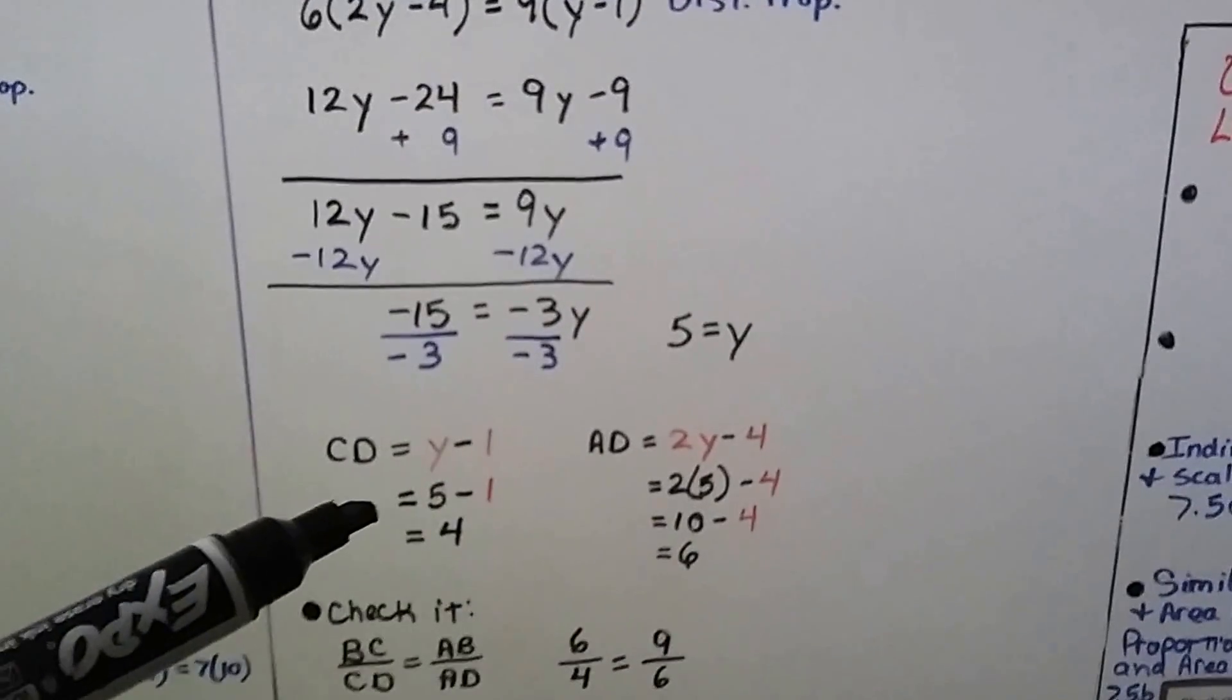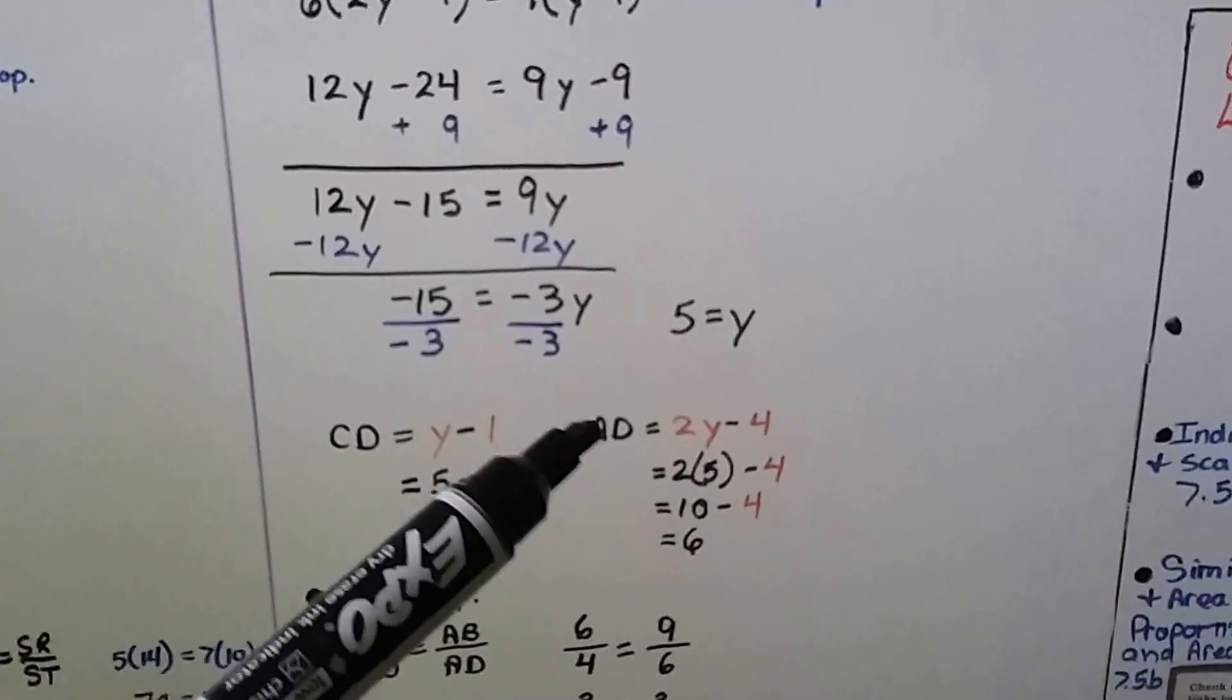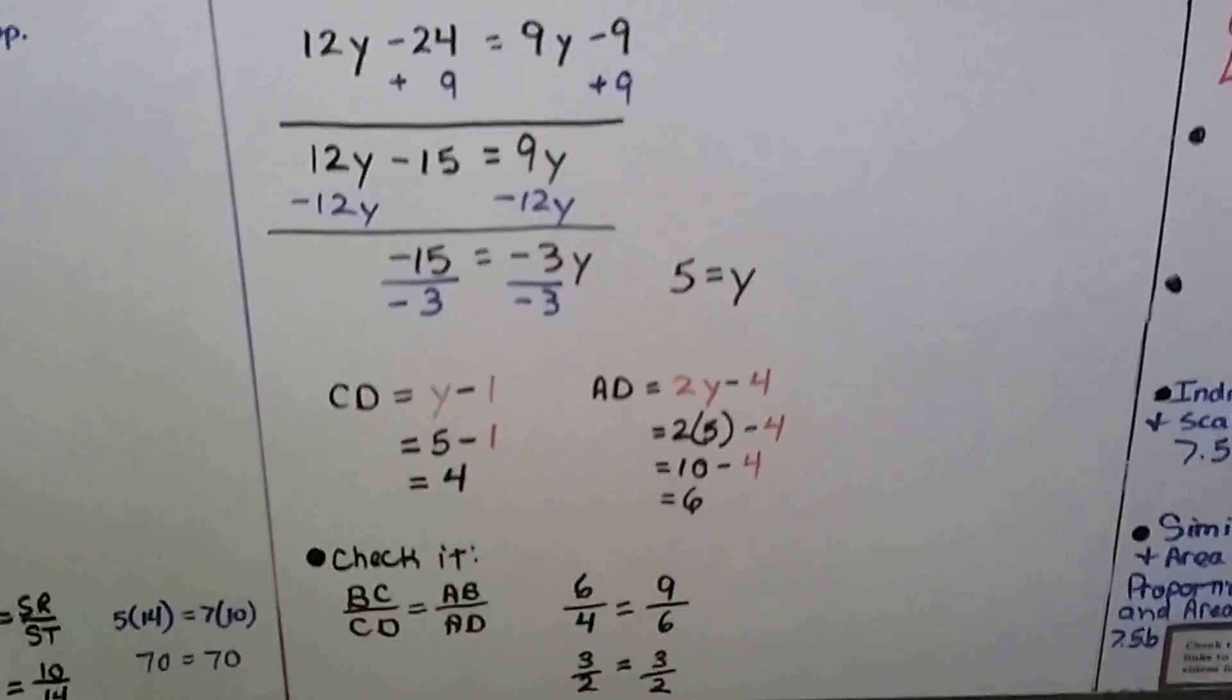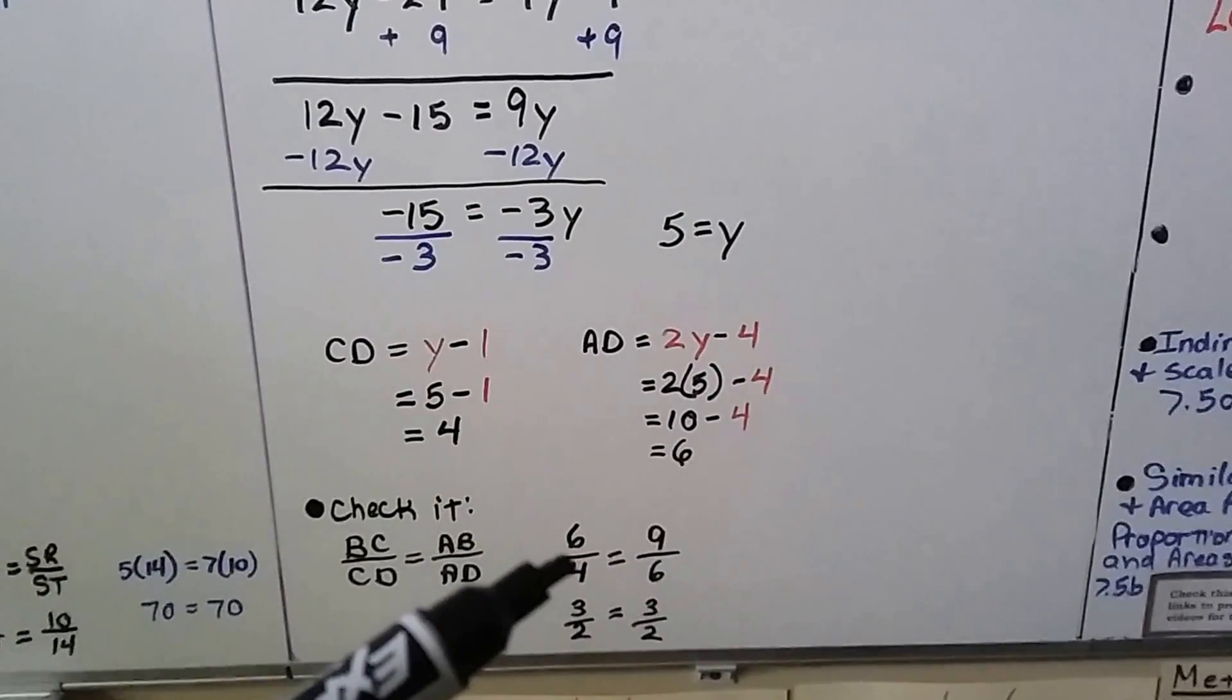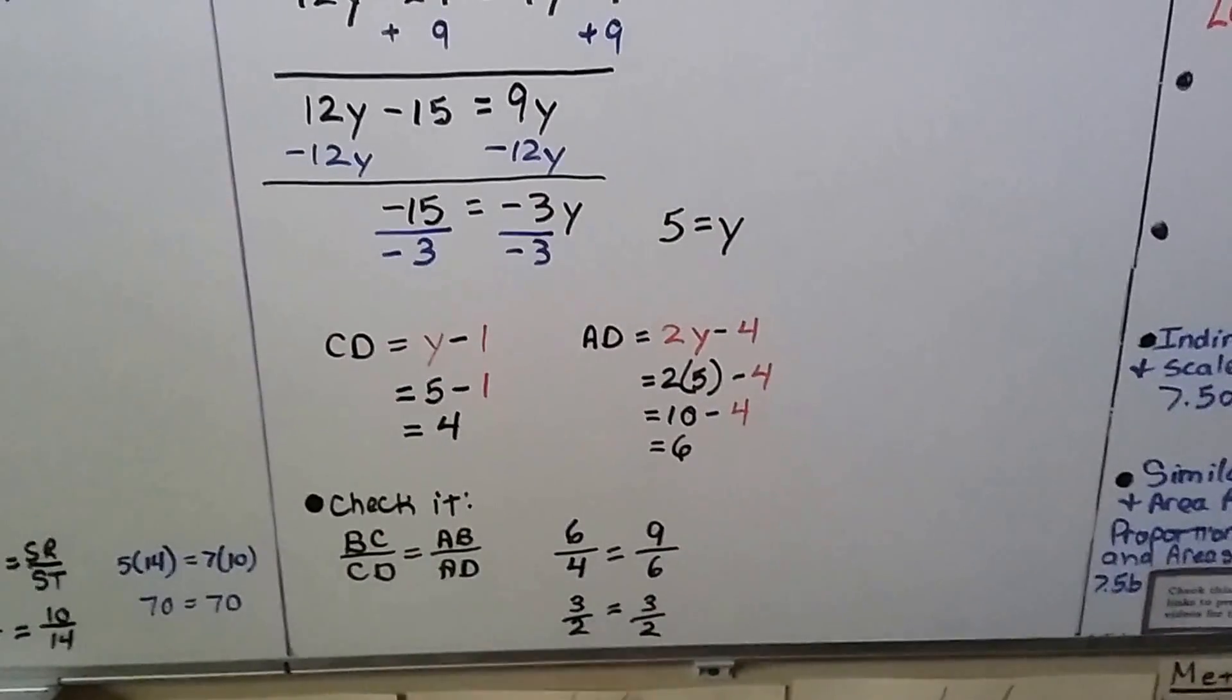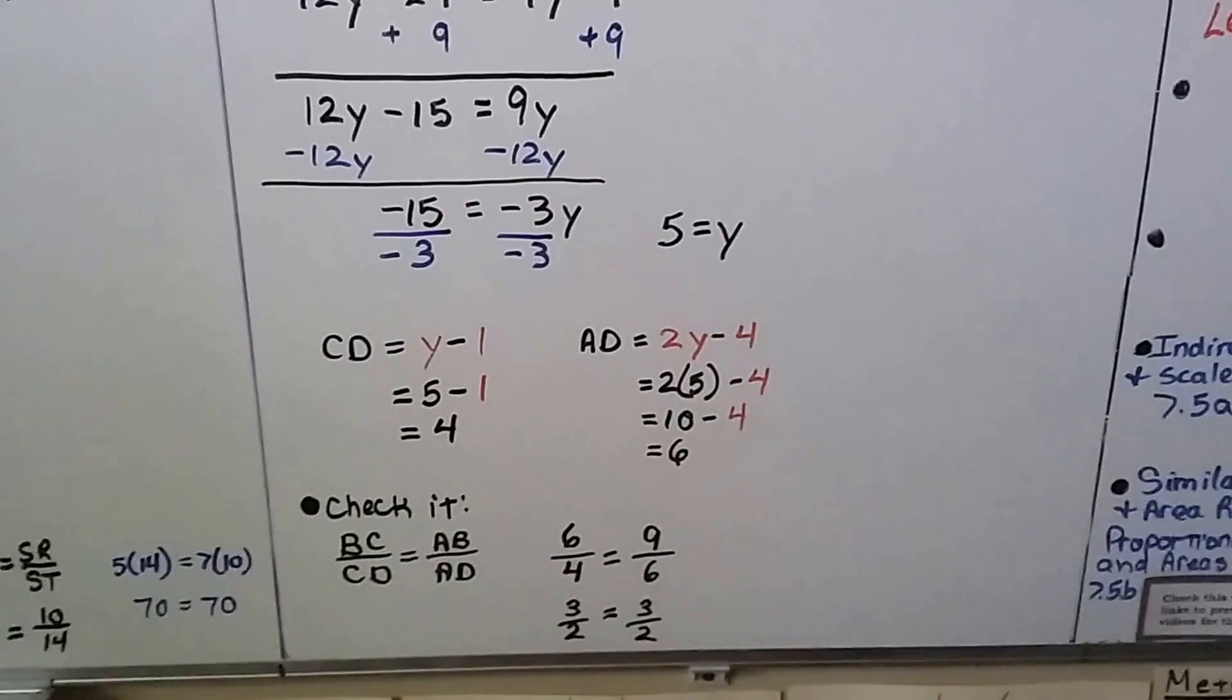Now we can substitute that in to the expressions and we get CD is equal to 4 and AD is equal to 6. We can check it by putting it into our proportion and we have 6 fourths is equal to 9 sixths, which means 3 halves is equal to 3 halves. And yes, that worked.